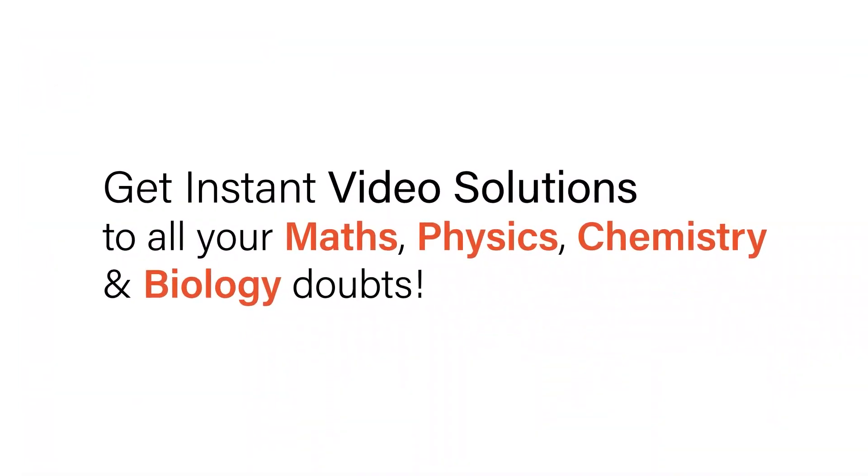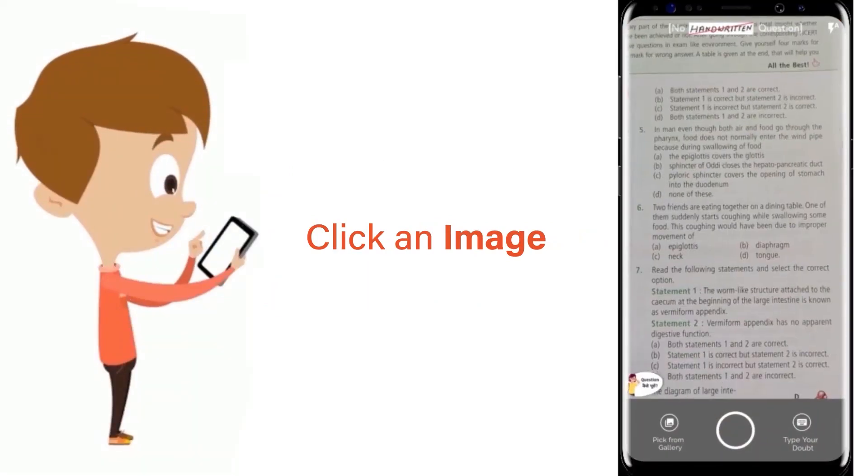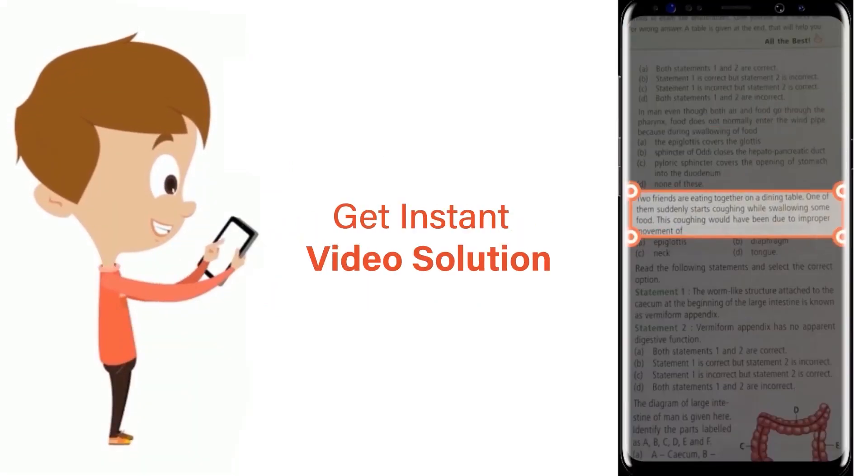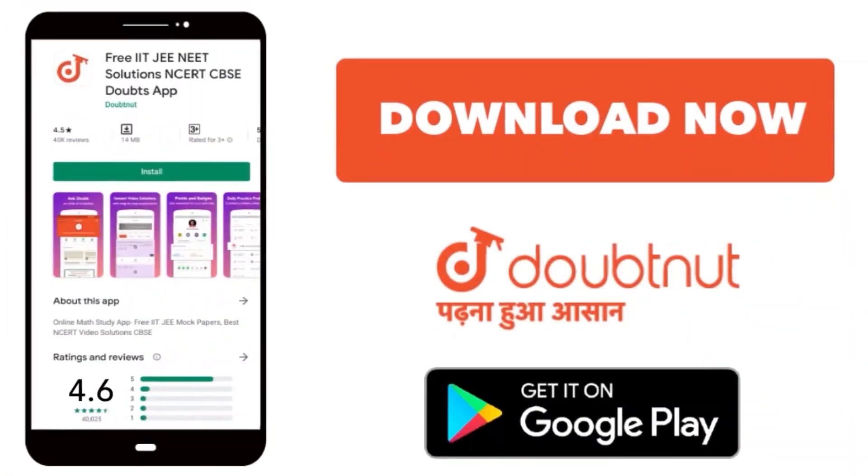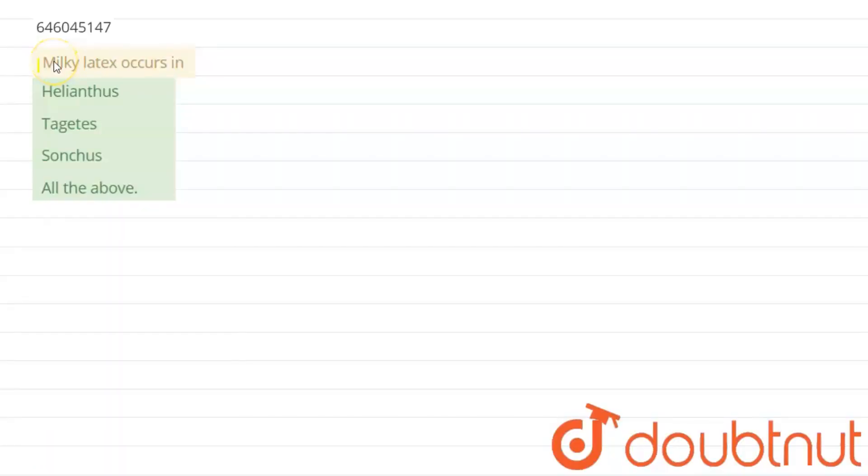With Doubtnet, get instant video solutions to all your math, physics, chemistry, and biology doubts. Just click the image of the question, crop it, and get an instant video solution. Download Doubtnet app today. The question is: milky latex occurs in - and the options are Helianthus, Tagetes, Sonchus, or all the above.